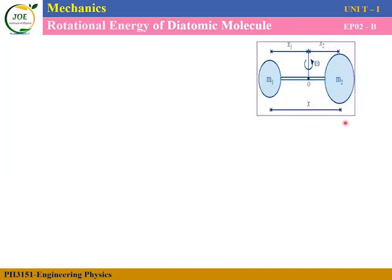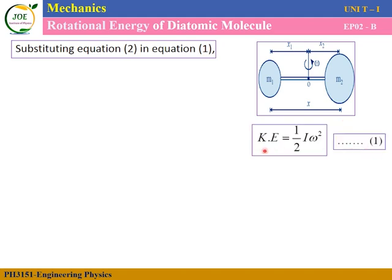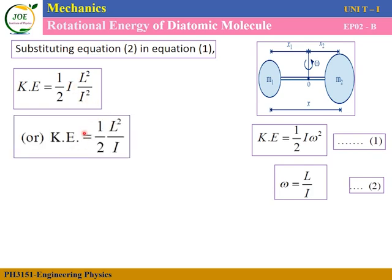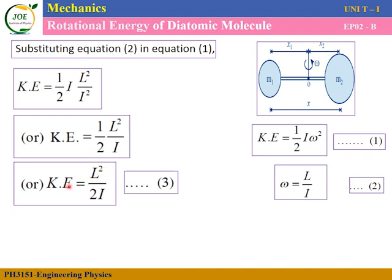From equation number one, the kinetic energy of the rotating diatomic molecule is one half I omega squared. Substituting omega equals L divided by I from equation two into equation one, we get kinetic energy equals one half times I times L squared divided by I squared. Cancelling one factor of I, kinetic energy equals L squared divided by 2I — equation number three.